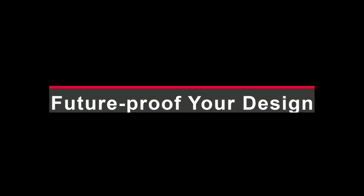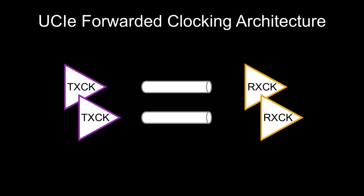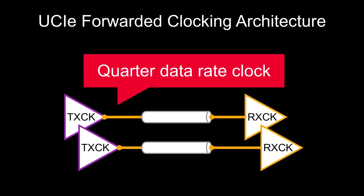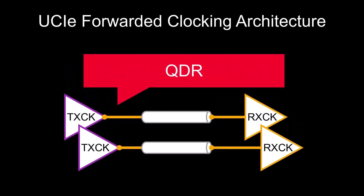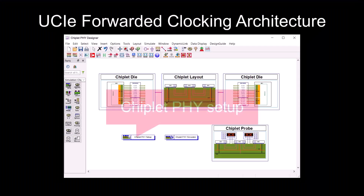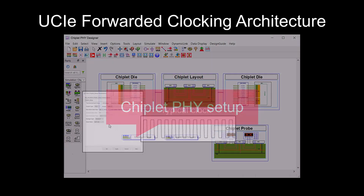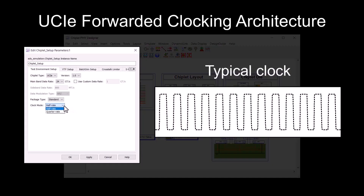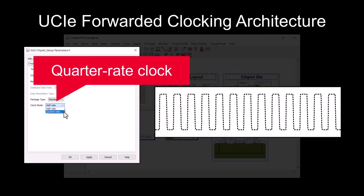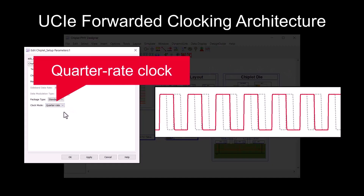Are you designing with the UCIe standard? UCIe specifies a forwarded clocking architecture that requires support for quarter data rate clock, QDR. With Chiplet Phi Designer, you can simulate the forwarded QDR clock as defined by the standard.